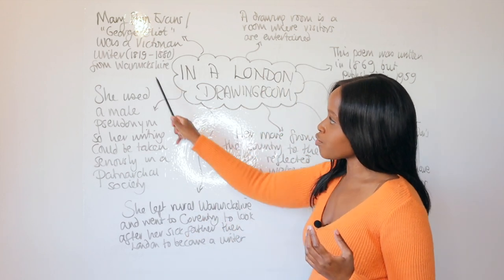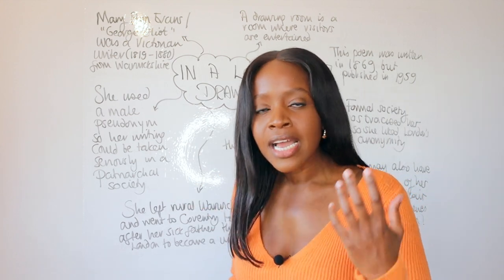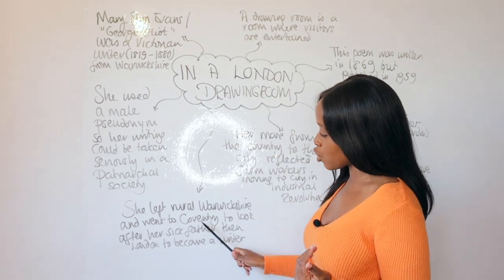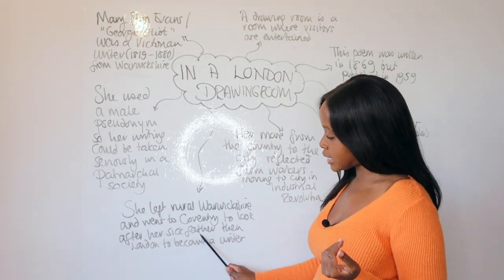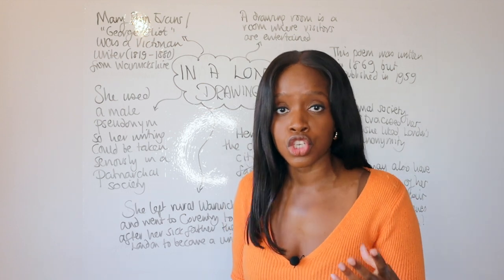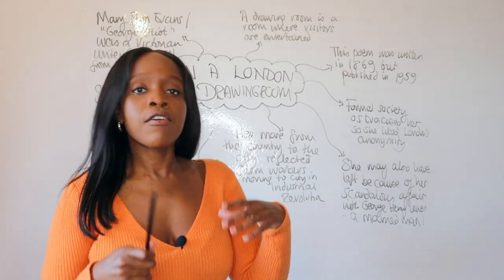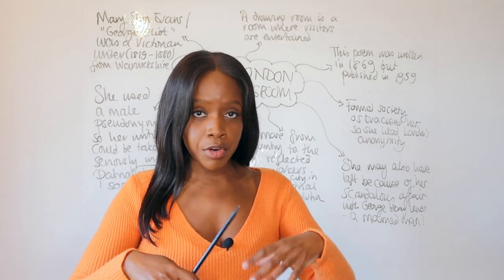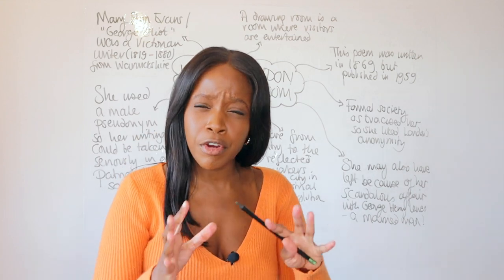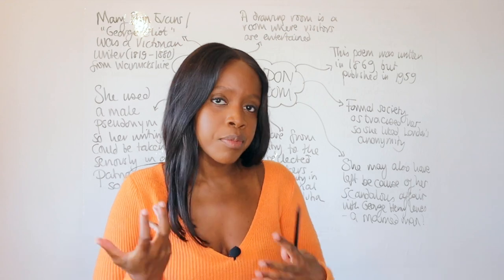She initially was from rural Warwickshire, but she later decided to move to the city. She first moved to Coventry to look after her sick father, and then she eventually moved to London to pursue her writing career. As a woman, this was seen as a very radical move. During Victorian society, women tended to follow very strict roles, especially women from upper-class society like her.